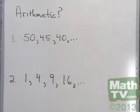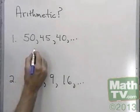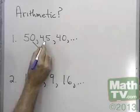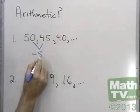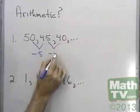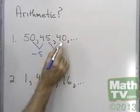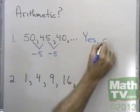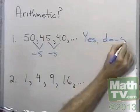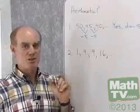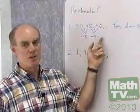First, are these sequences arithmetic sequences? Let's check. To go from here to here with addition, I would add negative 5. That is, 50 plus negative 5 is 45; 45 plus negative 5 is 40. So the answer is yes, this is arithmetic. And in fact, d, the common difference, is negative 5. An arithmetic progression is one in which we add the same number each time.